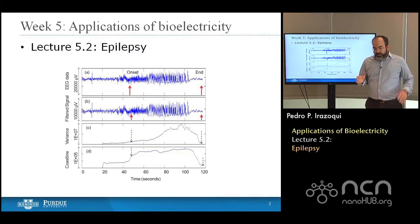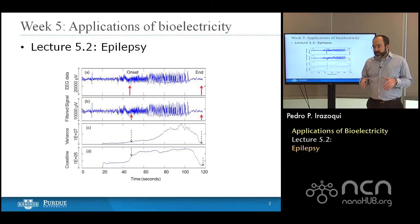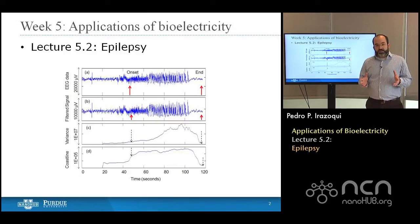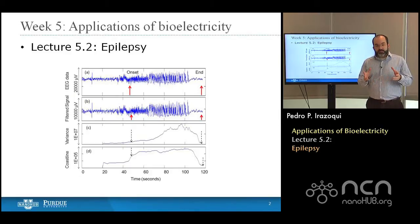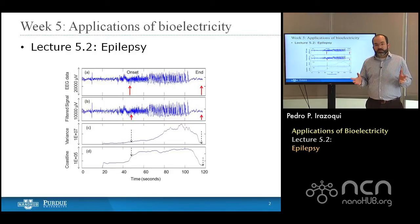If you look at the population of epileptics, it's about 1% of the worldwide population. In the United States, that means about 3 million people. Of those 3 million, a third don't respond to pharmacological treatments — they don't respond to drugs. So you have a significant population, a million patients in the United States, for whom no treatment is available pharmacologically.